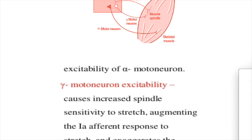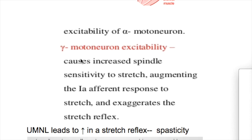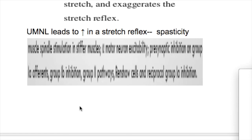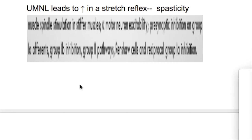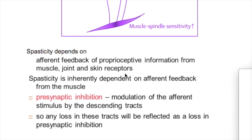As a result of inhibition of the supraspinal pathways, there is increased excitability of the alpha and gamma motor neurons, whereas there is decreased excitability of the inhibitory 1a and 1b fibers and the Renshaw cells, causing relaxation of the antagonistic muscles. When presynaptic inhibition and reciprocal inhibition are decreased, alpha motor neuron excitability increases along with gamma motor neuron and muscle spindle sensitivity, causing muscle contraction and increased stretch reflex.